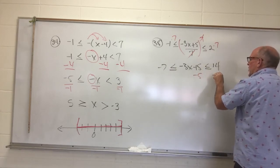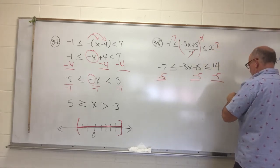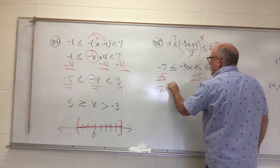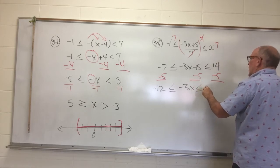Let's subtract 5. Three times. Show me all your work. So negative 12. Less than or equal to negative 3x. Less than or equal to 14 minus 5, 9, I believe.